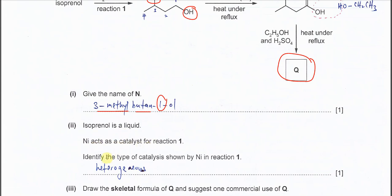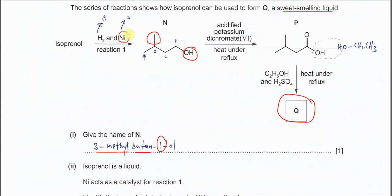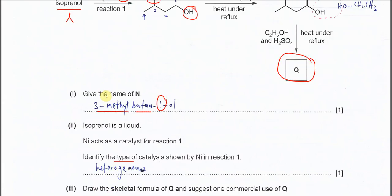Part two. Isoprene is a liquid. Nickel act as a catalyst in reaction one. Identify the type of catalyst shown by the nickel in reaction one. This one, nickel is solid form. The isoprene, which is a reactant, is liquid, liquid and solid, different phase. That's why the nickel is the heterogeneous catalyst, heterogeneous means different phase.